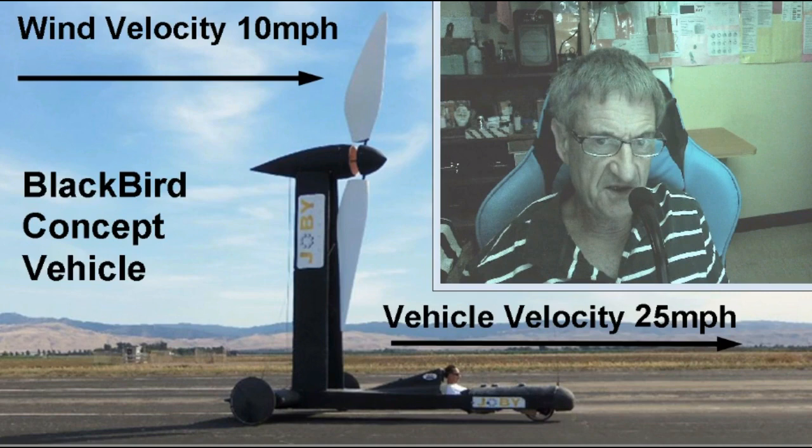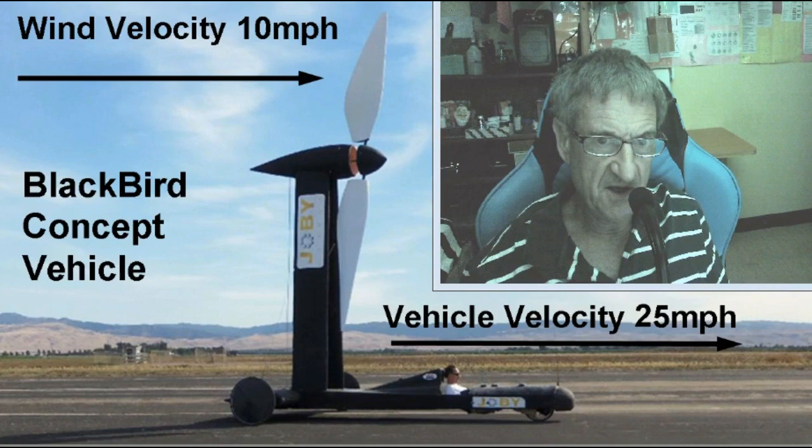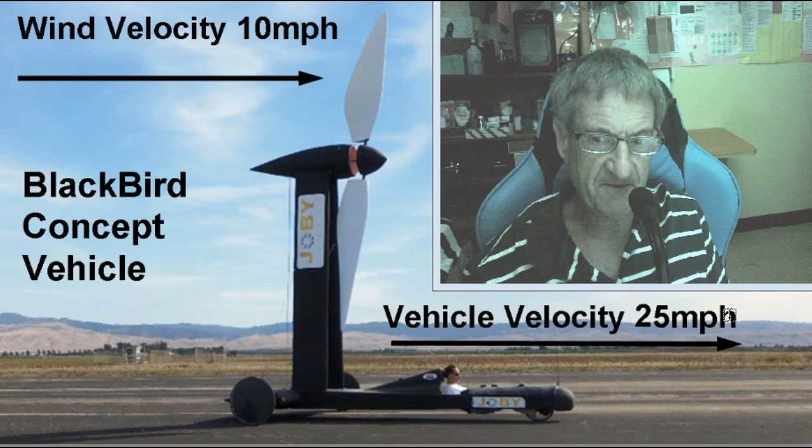There's some controversy surrounding this vehicle, and some videos have been made about it. The interesting thing is that supposedly it can travel downwind faster than the speed of wind. So the wind might be only 10 miles an hour, and yet they claim the vehicle can go up to 25 miles an hour downwind.